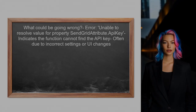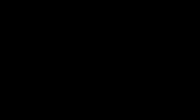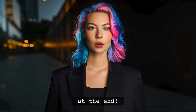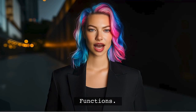So what could be going wrong here? The error message — unable to resolve value for property SendGridAttribute.APIKey — usually indicates that the function cannot find the API key in the expected location. This often happens when the settings are not configured correctly or the UI has changed. Stick around, because at the end of this video, I'll share a quick tip that can save you a lot of time and headaches when working with Azure Functions.